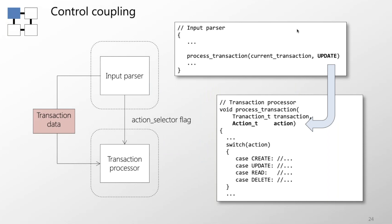Moving up the spectrum to control coupling: two modules are control-coupled if one passes a flag or signal to another to control its processing. For example, an input parser provides an action flag to a transaction processor saying what action to perform. The problem is the transaction processor no longer has all the code it needs to perform its functionality — it requires external logic telling it what to do, making reuse harder.